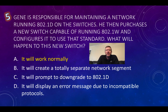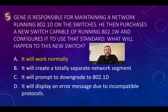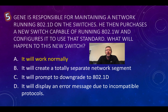Question number five: Gene is responsible for maintaining a network running 802.1d on the switches. He then purchases a new switch capable of running 802.1w and configures it to use that standard. What will happen to this new switch? 802.1d is our spanning tree protocol and 802.1w is our rapid spanning tree protocol. They are actually compatible with each other, so the switch will work normally. It's not going to create a new network segment, downgrade to standard spanning tree, or display any error message. This is going to be A.